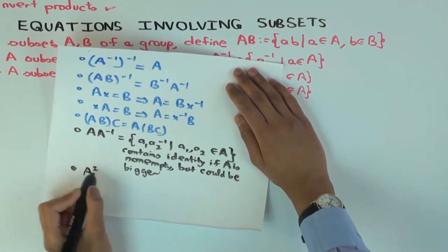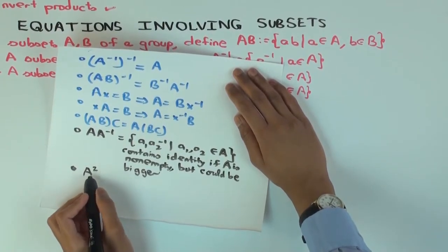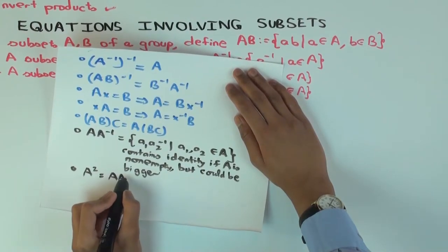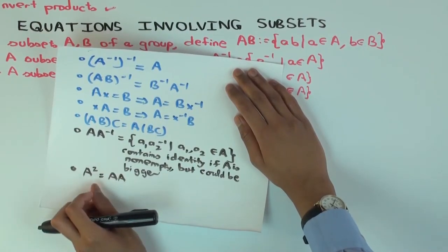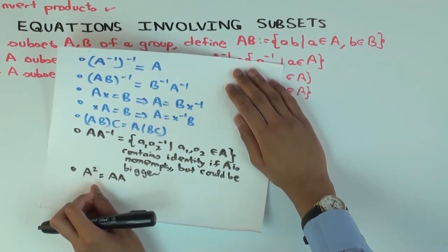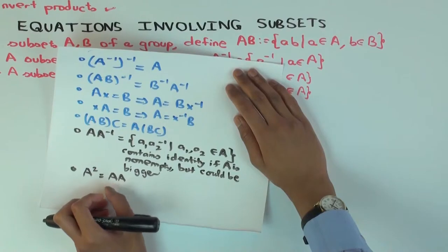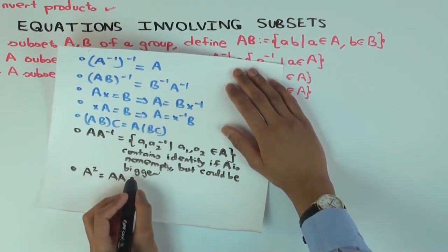A square is what? Well, the way I have defined A square is just, if you define it as AA. Is this just a set of squares of things in A? No. Why not? Because of the definition. So the definition actually says it's products of two things in A, which will definitely include all the squares of things in A, but could have more stuff.